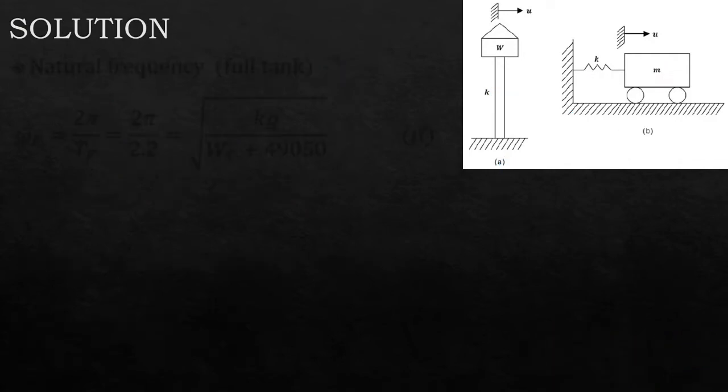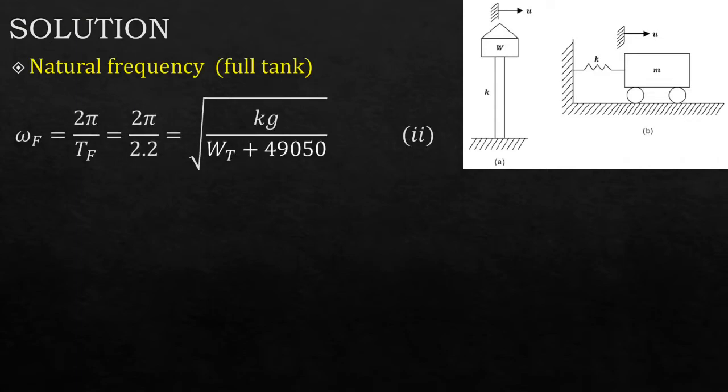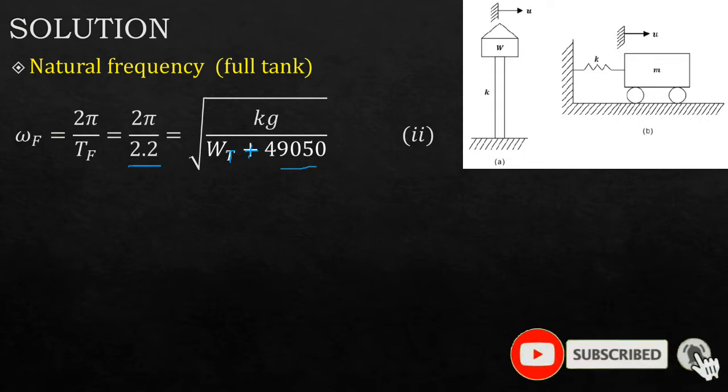Then the same case, we can calculate the angular frequency when it's full of water. When it's full of water, the period lengthens to 2.2. So the same expression: omega full equals 2π over 2.2 equals square root of kg over the weight of the tank plus the weight of the water, which we calculated to be 49,050 Newtons. So you have equation one and two.